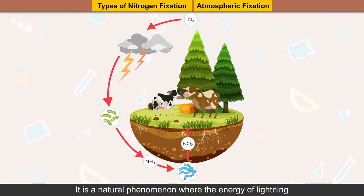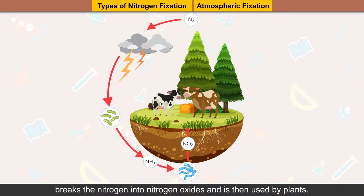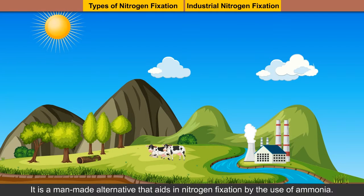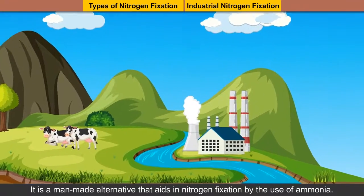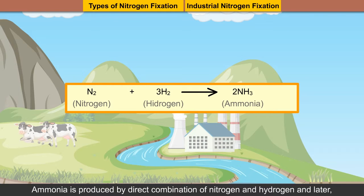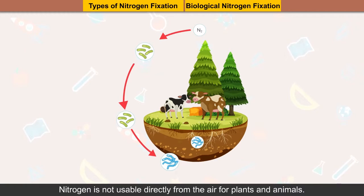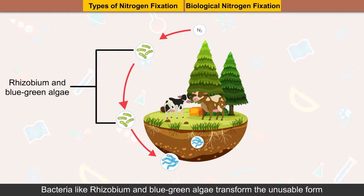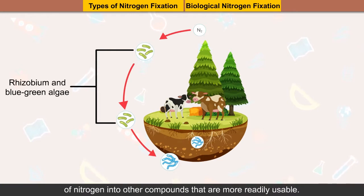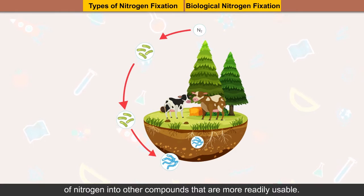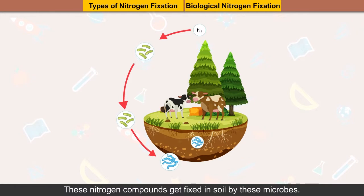Types of nitrogen fixation — Atmospheric fixation: It is a natural phenomenon where the energy of lightning breaks nitrogen into nitrogen oxides, which are then used by plants. Industrial nitrogen fixation: A man-made alternative that aids in nitrogen fixation by the use of ammonia. Ammonia is produced by direct combination of nitrogen and hydrogen and later converted into various fertilizers such as urea. Biological nitrogen fixation: Bacteria like Rhizobium and blue-green algae transform the unusable form of nitrogen into other compounds that are more readily usable. These nitrogen compounds get fixed in soil by these microbes.